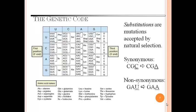Here in the following figure is the genetic code. Substitutions are mutations accepted by natural selection. Synonymous: CGC gives CGA, and non-synonymous: GAU gives GAA.